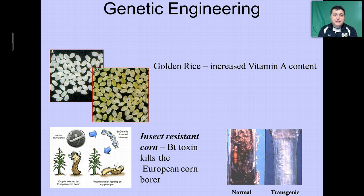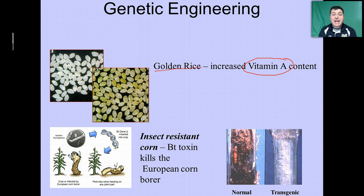But if genetic engineering is going to be a useful tool, it has to produce useful products. Here are just a few examples. One useful product is what we call golden rice, in which genes for the precursors to the molecule that makes vitamin A are inserted. This could be useful because in many parts of the world individuals are vitamin A deficient, and without vitamin A at a young age you can actually go blind. By producing and distributing golden rice, we can prevent childhood blindness associated with vitamin A deficiencies.